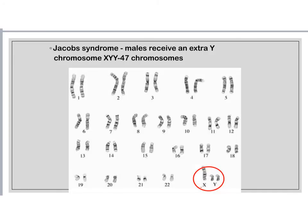We also have Jacob syndrome. This is when males receive an extra Y chromosome, so they have 47 chromosomes and are XYY. Remember, just because you have an extra X or Y chromosome, as long as a Y chromosome is present, that individual is male. If there are no Y chromosomes present, then that individual is female. So in this case, the XYY individual is male. People who have Jacob syndrome are typically much taller and much skinnier than normally developing people, and it typically takes them a little bit longer to learn things.